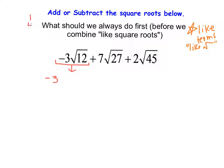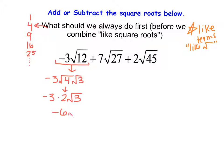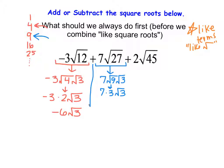Twelve is divisible by four, so I split it into the square root of four times the square root of three. The square root of four is two, so this becomes negative three times two times the square root of three, which combines to negative six square roots of three. Then for the square root of twenty-seven: twenty-seven is divisible by nine, so I rewrite it as seven times the square root of nine times the square root of three. The square root of nine is three, so that becomes seven times three, which is twenty-one square roots of three.